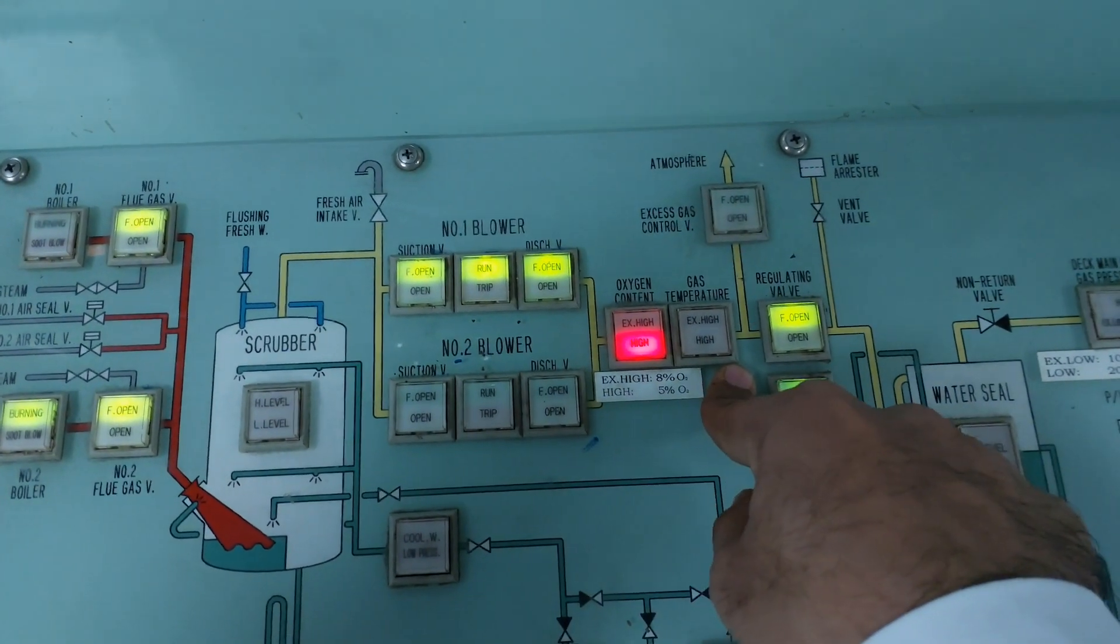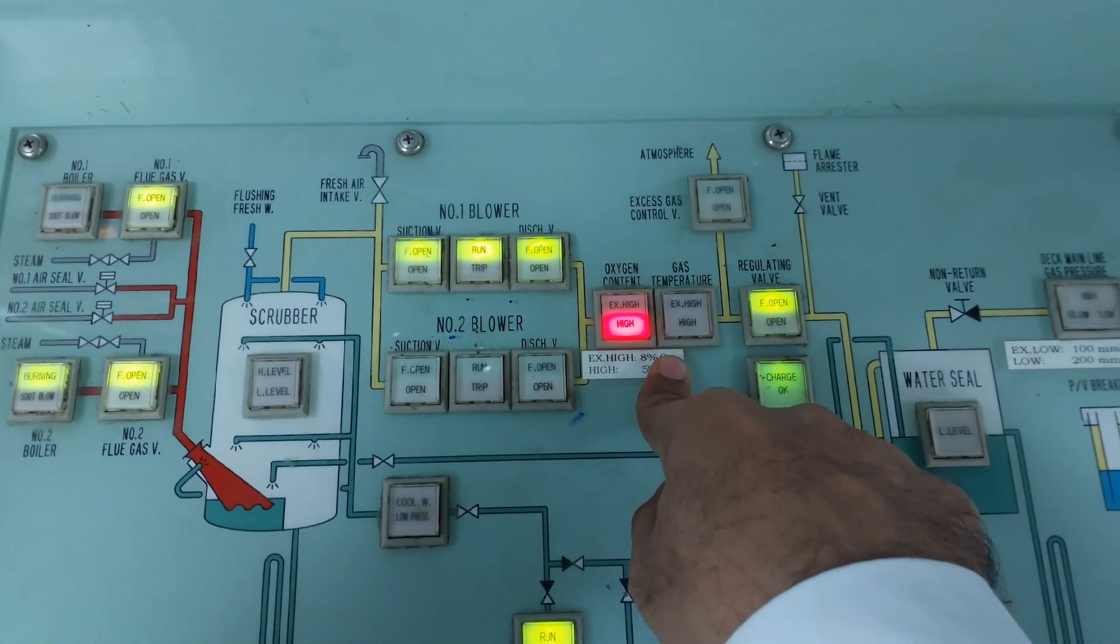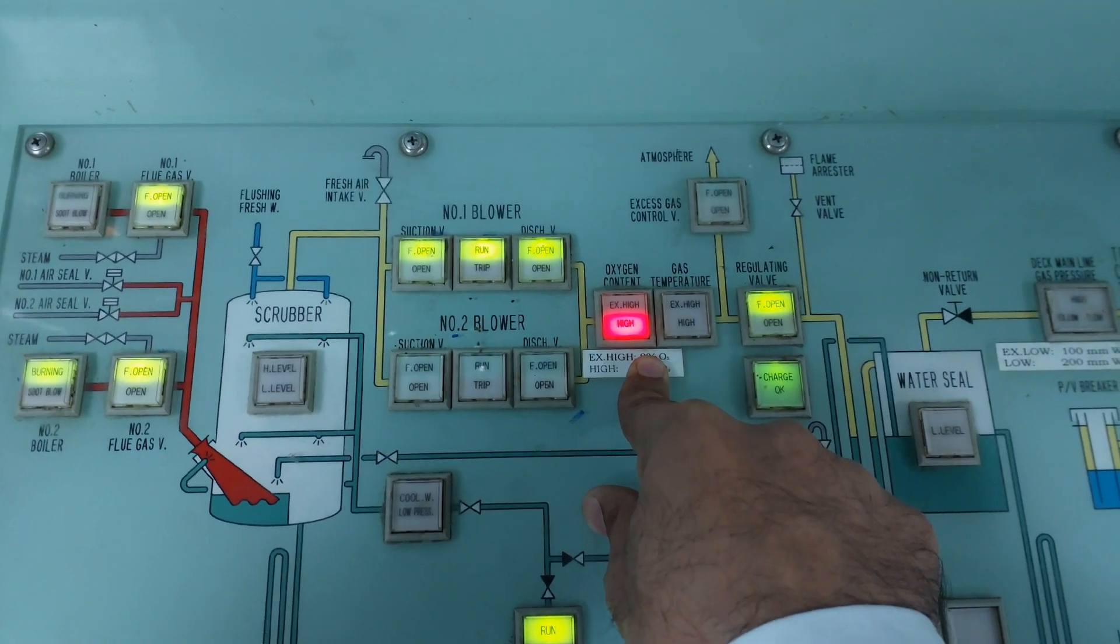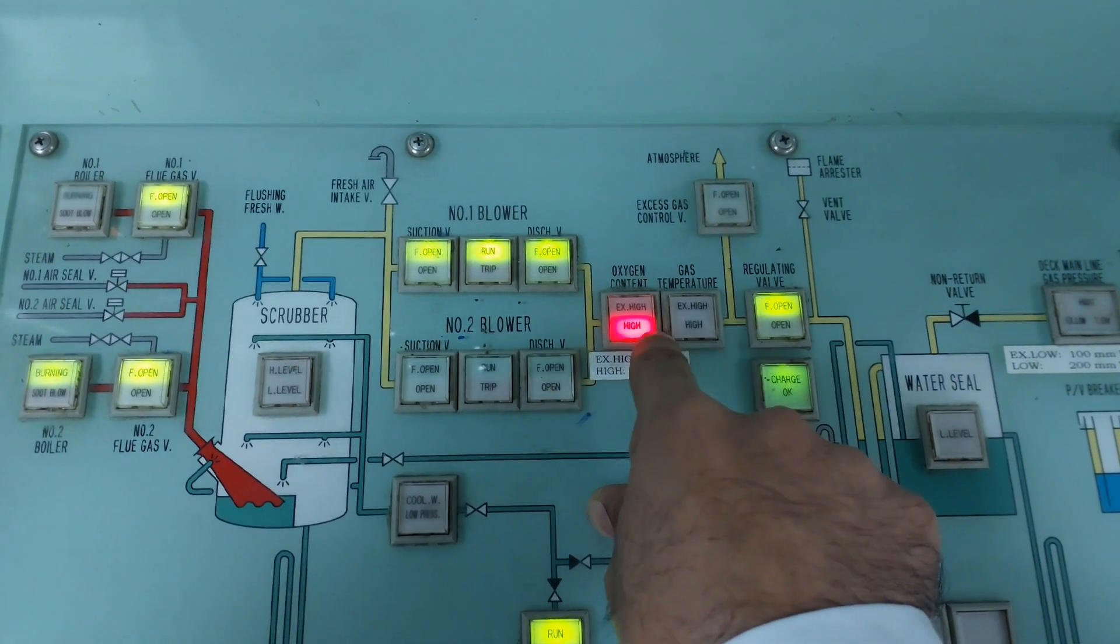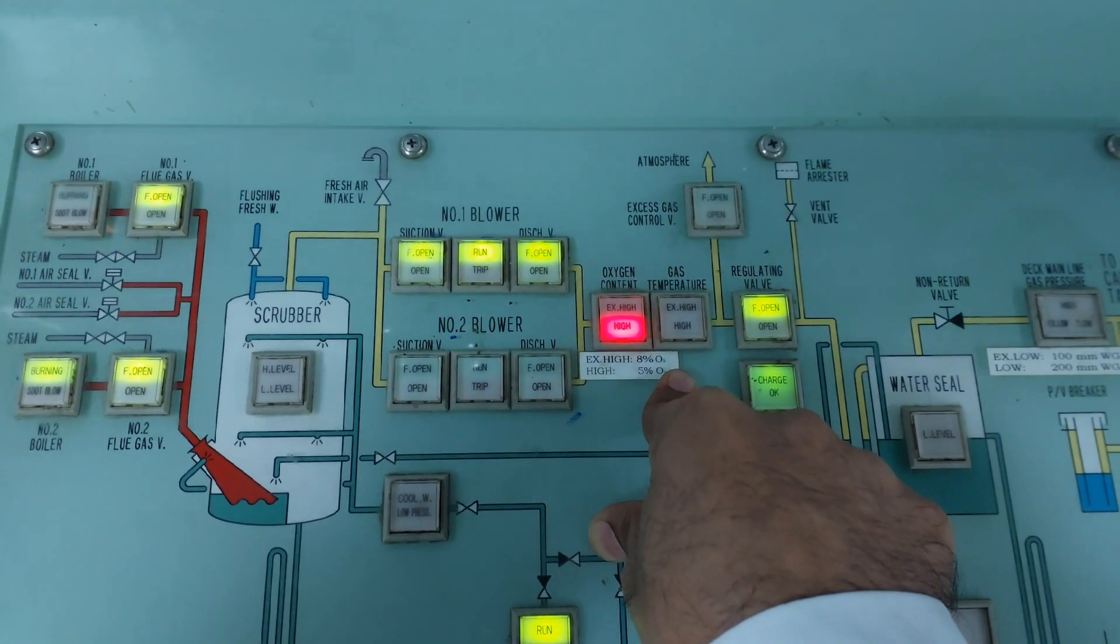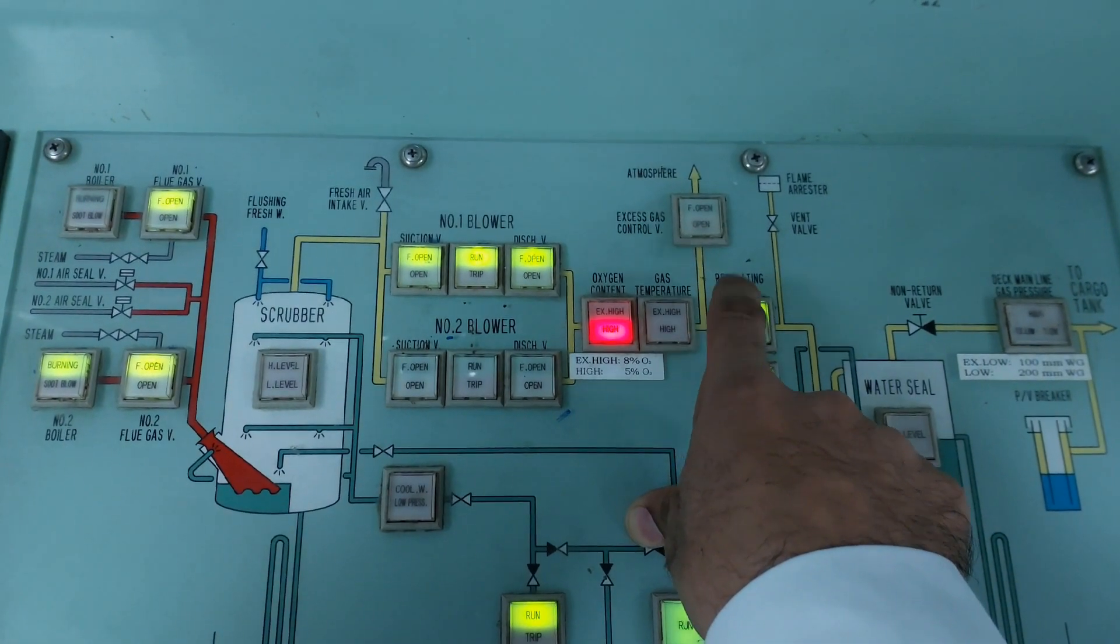After that, this blower goes to this O2 analyzer and temperature sensor. Currently we are having this high O2, so this is an alarm. Normally the O2 should be less than five percent for this alarm to go away. It's more than five, less than eight percent. After that, this temperature sensor.